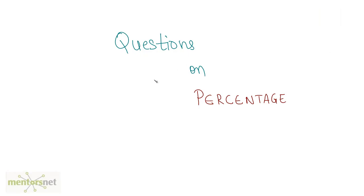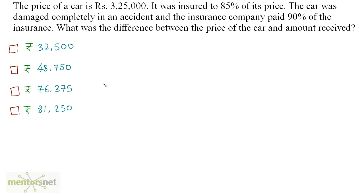Let's look at some more questions on percentage. The price of a car is 3,25,000 rupees. It was insured to 85% of its price. The car was damaged completely in an accident and the insurance company paid 90% of the insurance. What was the difference between the price of the car and the amount received?